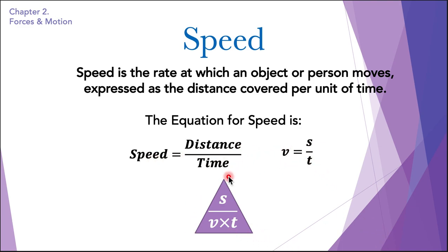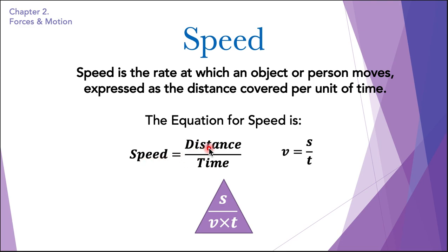Just like a triangle was used for the density equation, there is a triangle here again for this equation as well. We can use this triangle to rearrange the equation to find other values. For example, to find distance, hide S and get speed multiplied by time. To find time, divide speed by distance. To find speed, divide distance by time.